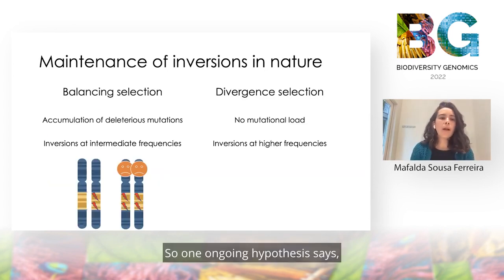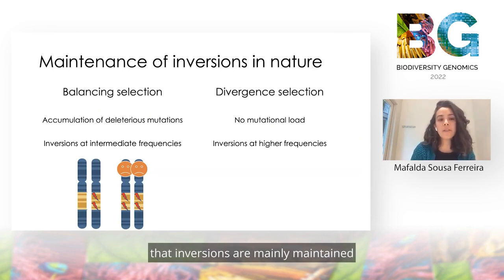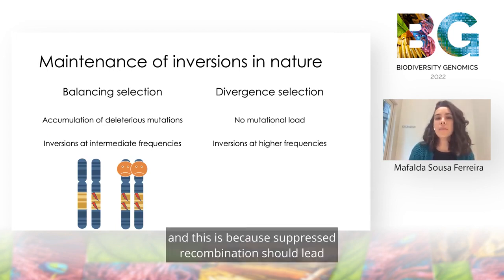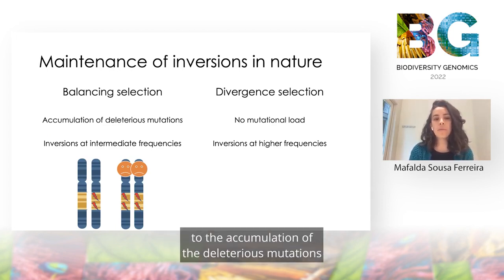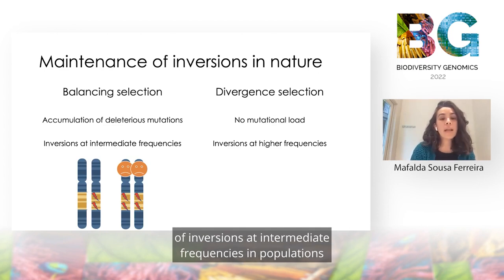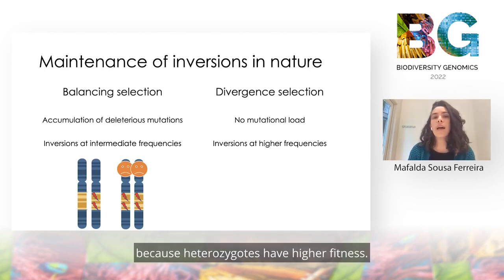One ongoing hypothesis says that inversions are mainly maintained in natural populations by balancing selection. This is because suppressed recombination should lead to the accumulation of deleterious mutations in the inverted haplotypes, which favors the maintenance of inversions at intermediate frequencies in populations because heterozygotes have higher fitness.